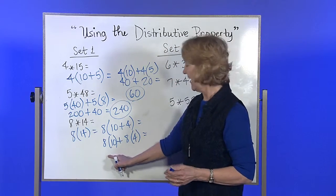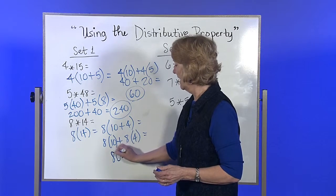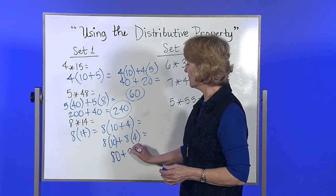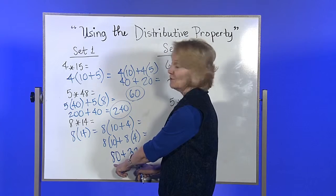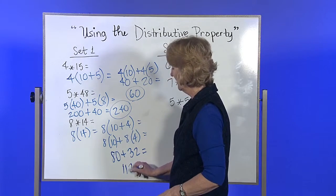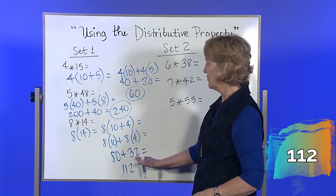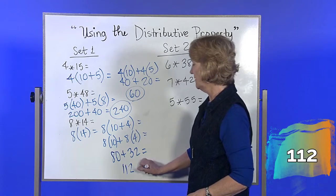8 times 10 is 80, 8 times 4 is 32. The only numbers you really add are the 8 and 3, and you get 11, and this 2 plus 0 is 2, so 112.